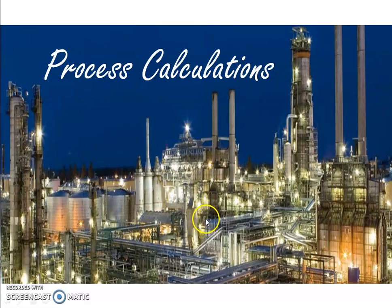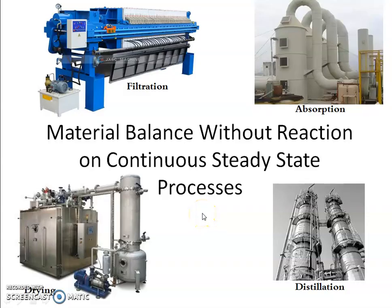Till now, what we had seen was how to write a general balance equation — without reaction or with reaction — for a steady state or an unsteady state process. We had also seen in previous videos that processes can be of three types: continuous, batch, or semi-batch. The focus of this video is writing material balance equations for continuous steady state processes without reaction.